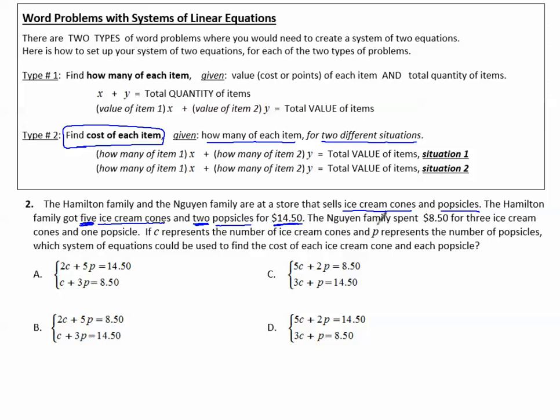The Nguyen family spent $8.50 for three ice cream cones and one popsicle.